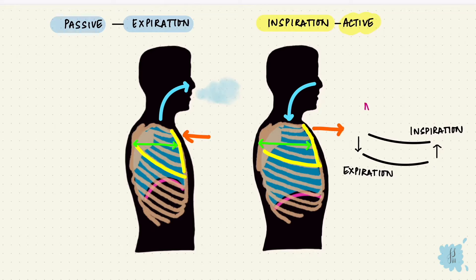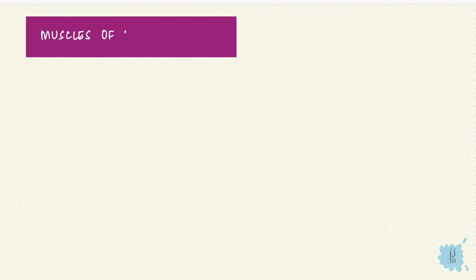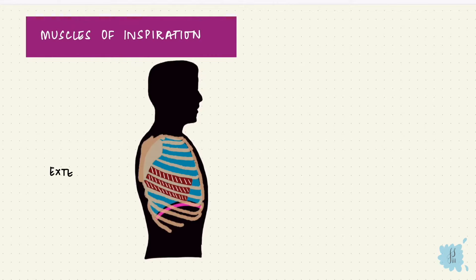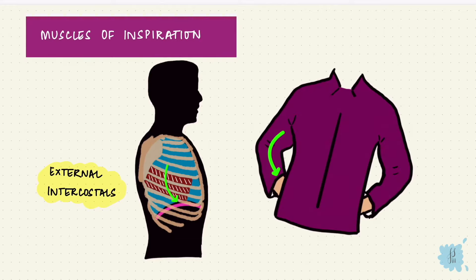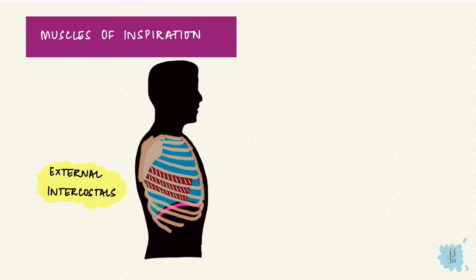But what moves the ribs? Muscles. The muscles that elevate the ribs will be those of inspiration, and those that depress the ribs will be those of expiration. So in addition to the diaphragm, the external intercostal muscles are muscles of inspiration. They are attached to the ribs and directed forwards and downwards to attach to the rib below — like the direction of your hands when you put them in your jacket pockets. Because of the direction of these fibers, when they contract, the ribs move up. These two muscles are good enough during regular inspiration.